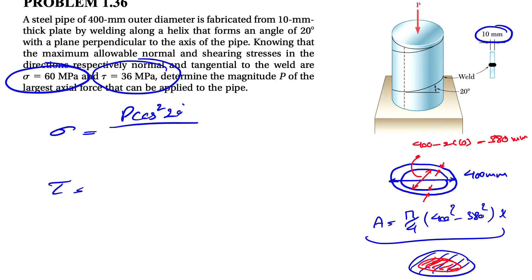And since all the dimensions are in millimeter, we're going to have 10 to the minus 6 in order to get it in meter squared. So we have that A in here.